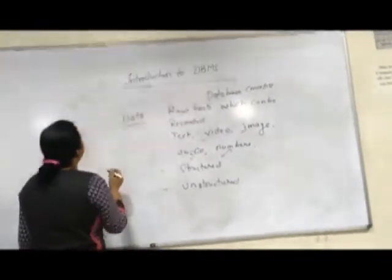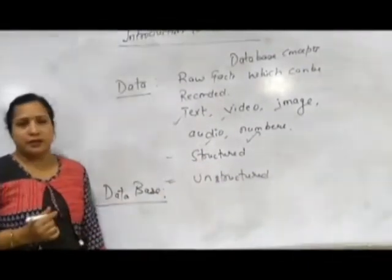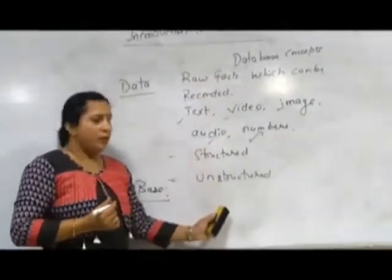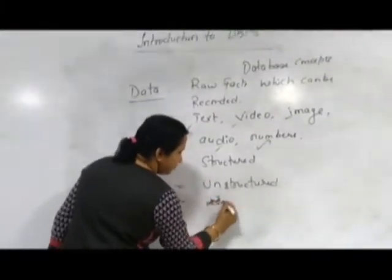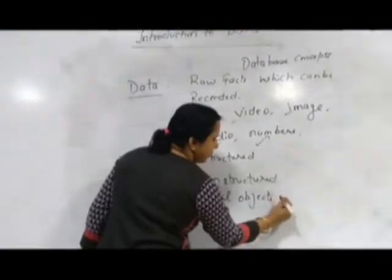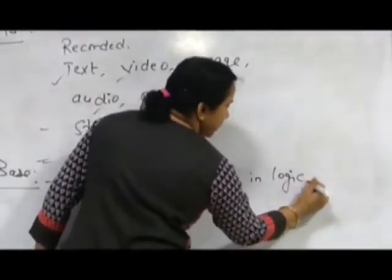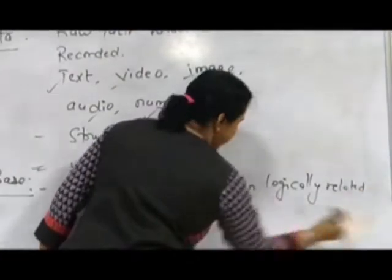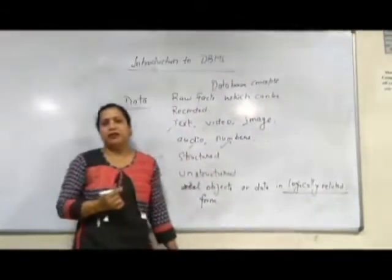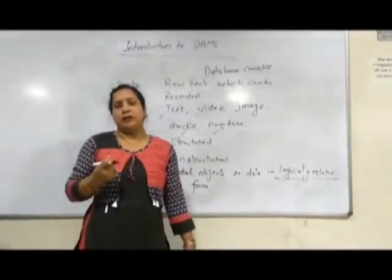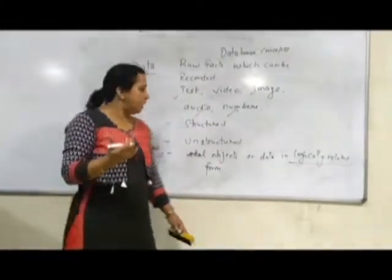The next concept is database. What exactly is a database? A database is real objects or data in logically related form. When we emphasize on logically related form, it means that whenever we have logically related data which can be stored in the form of entities or objects, we call it a database.